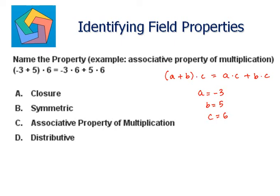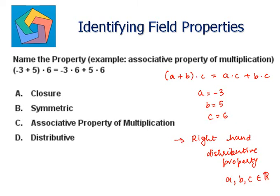And this in real numbers is defined as the right-hand distributive property, where A, B, and C should belong to the real line. So we can say D, distributive, is the answer.